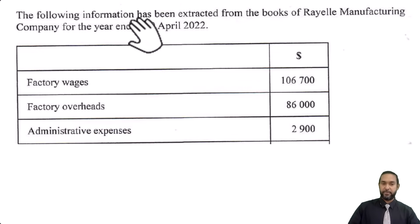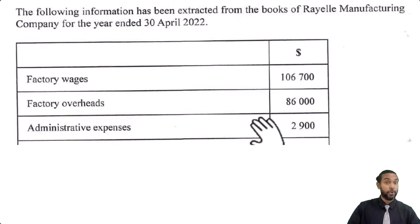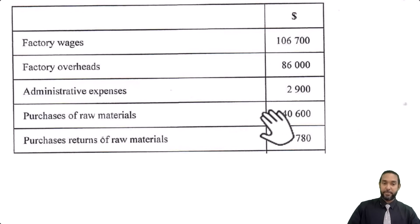Okay, so part B says the following information has been extracted from the books of Rael Manufacturing Company for the year ended 30th April 2022. We have factory wages, which is usually direct, factory overheads, admin expenses. So that doesn't go in the manufacturing account. That's a red herring to catch people who don't know what they're doing. Purchases of raw materials. Purchases returns of raw materials.